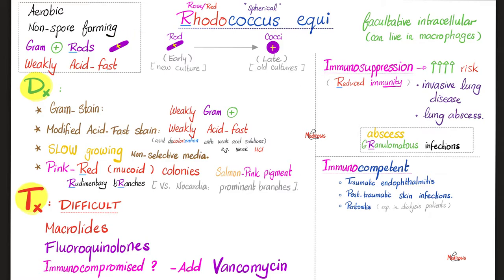Rhodococcus is aerobic, non-spore-forming, gram-positive rod, and weakly acid-fast. Remember, Nocardia did not stain well with gram stain, but Rhodococcus will stain well, giving a gram-positive rod in the beginning, which will turn into a gram-positive coccus later. Rhodococcus is weakly acid-fast and, like Nocardia, is slow-growing on media. These are pink-red mucoid colonies with salmon pink pigment.